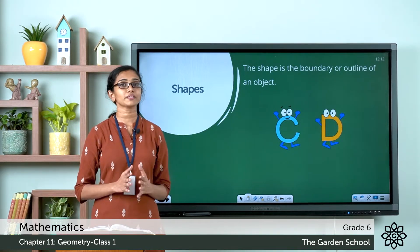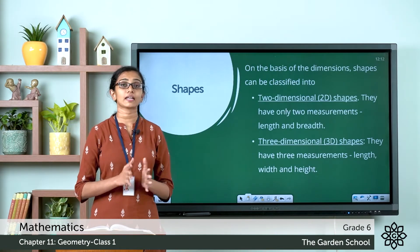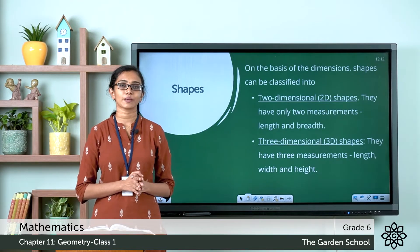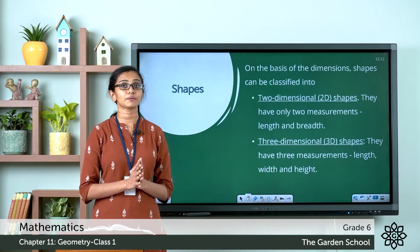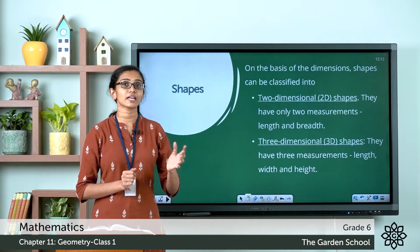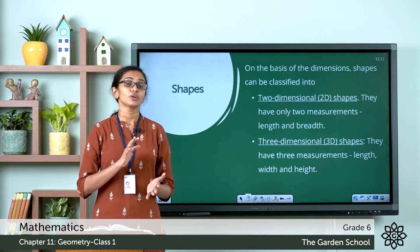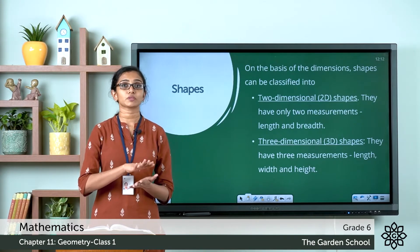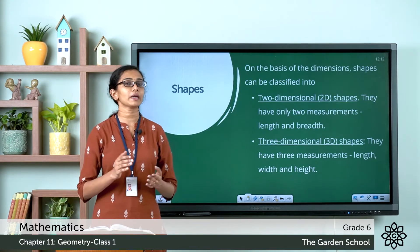On the basis of dimensions, we can classify shapes into two-dimensional and three-dimensional shapes. Two-dimensional or 2D shapes — as the name indicates — are flat shapes or plane shapes that have got only two dimensions, which is their length and width or length and breadth. You can lay them on a flat surface or draw them on a flat surface like a paper.